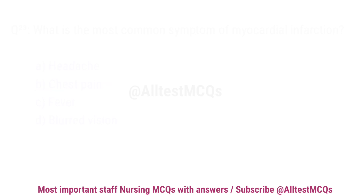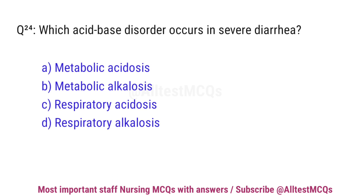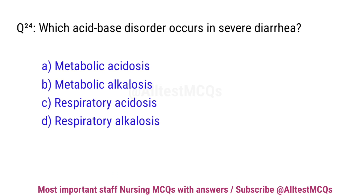Question number 24. Which acid-base disorder occurs in severe diarrhea? The correct option is A: Metabolic acidosis.